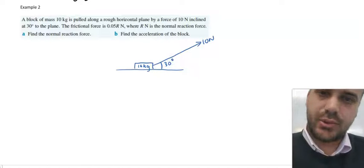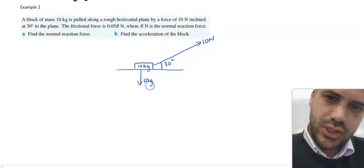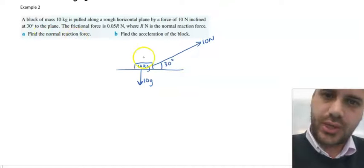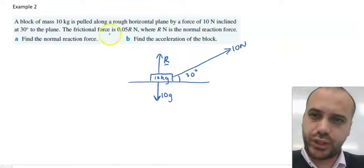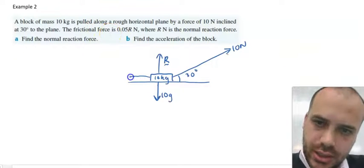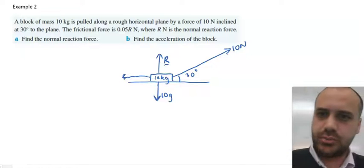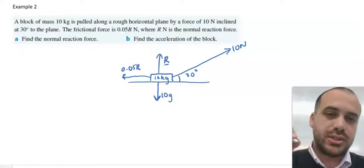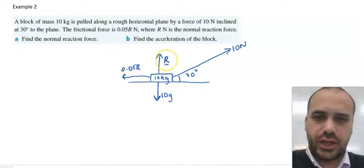All right, now obviously there's some gravity going on here. So we have 10g going in this direction. We have a normal reaction force up here, and we have a frictional force here. Friction moving against how we're pulling this object of 0.05R newtons, where R newtons is the normal reaction force.